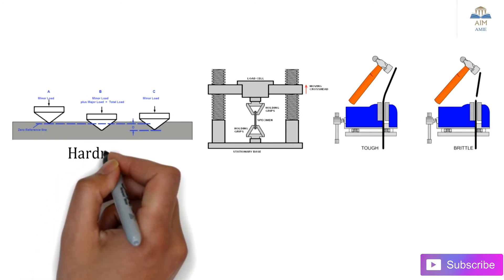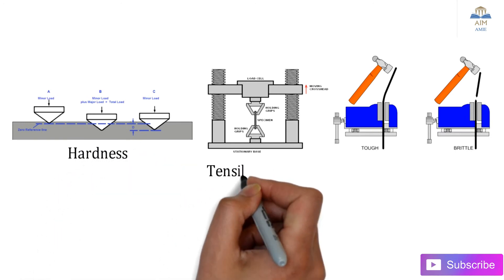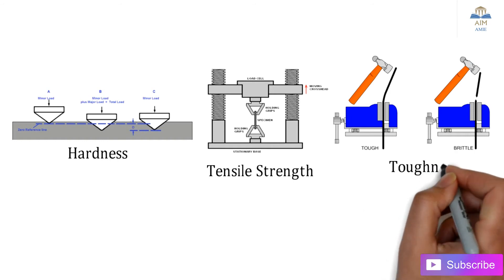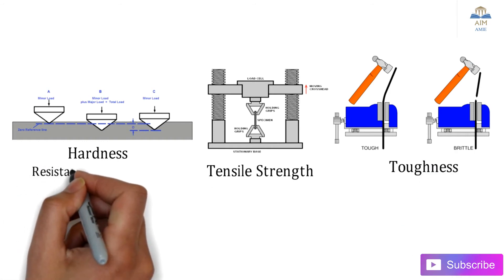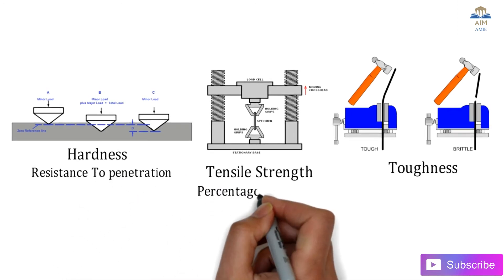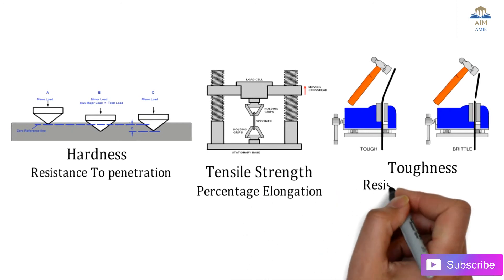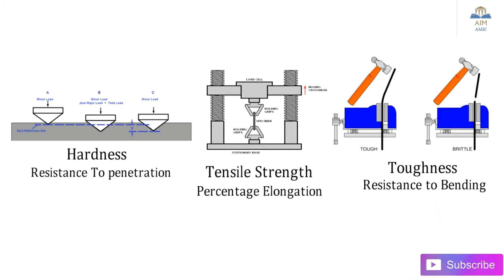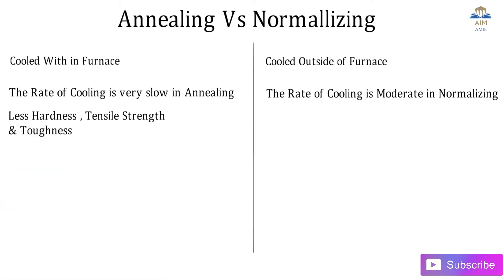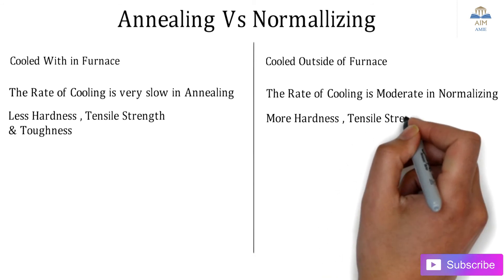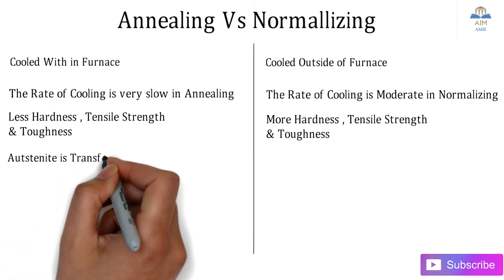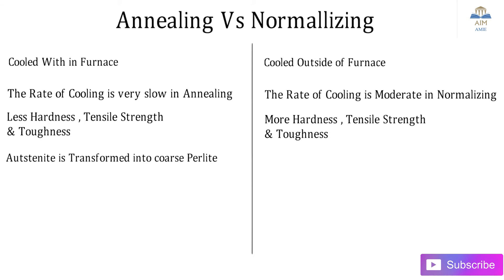Three images show different material characteristics: hardness, tensile strength, and toughness. Hardness is the resistance to penetration, tensile strength relates to elongation, and toughness is the resistance to bending. These mechanical properties — hardness, tensile strength, and toughness — are lower in annealing, whereas normalizing produces greater hardness, tensile strength, and toughness.